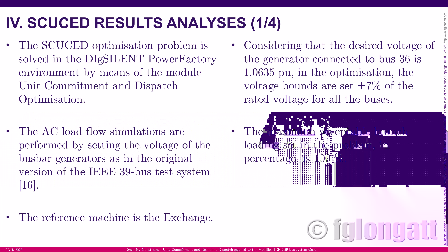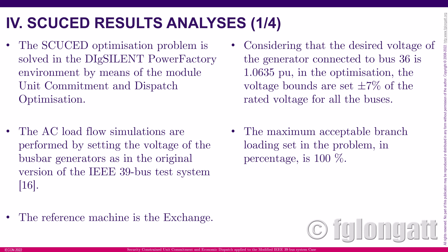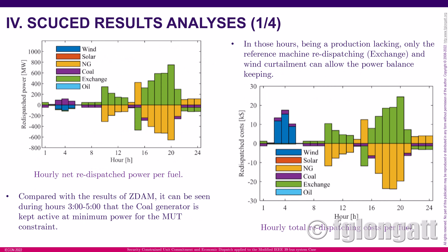For the second stage results — the SCUCED — we are using the powerful tool from DIgSILENT PowerFactory. PowerFactory has a very useful tool for unit commitment and economic dispatch, and we are leveraging that to solve the second stage. We are considering voltage limits and power capacity at the branches. On the left-hand side, you can see the hourly redispatch power per fuel, and the most important balancing generation technology is natural gas, also including the exchange from the external grid.